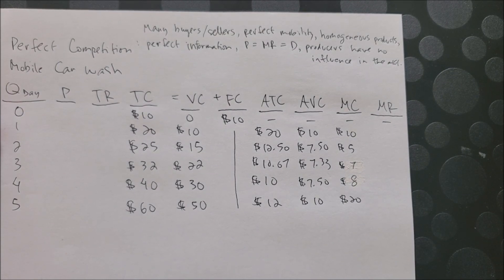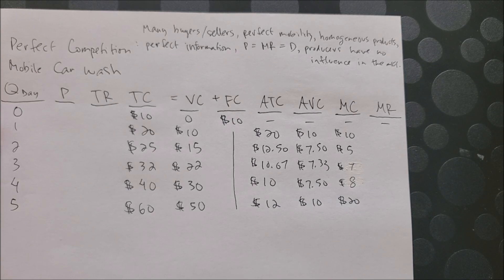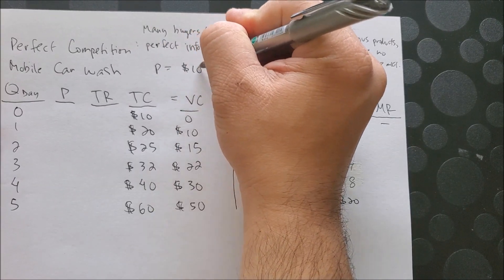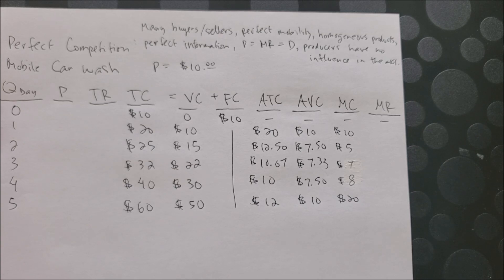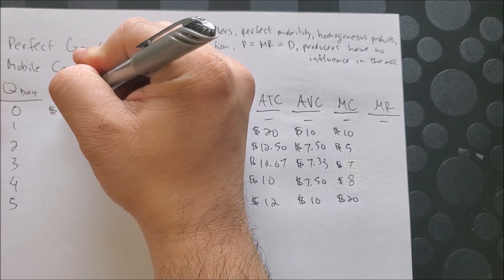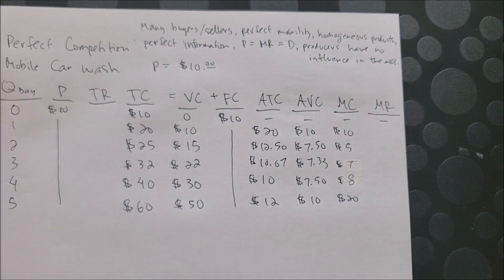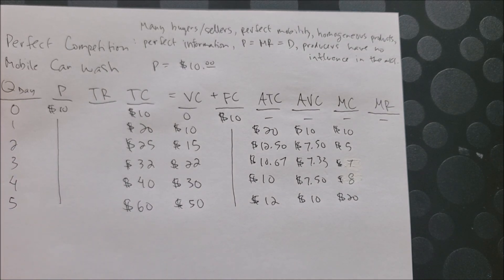So now I want you to see what's going to happen when we are going to have price that producers are not able to influence, but rather it's the going price set at ten dollars. And once we know that price is given, we can then go ahead and put price under the P column - ten dollars like so, all the way down. So if you are going to wash one vehicle, it would be ten dollars; four vehicles, ten dollars each.